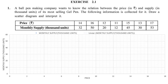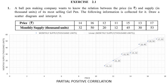Plotting the points: price 14 with supply 32, price 16 with supply 50, price 12 with supply 20, price 11 with supply 12, price 15 with supply 45, price 13 with supply 30, and price 17 with supply 53. All points are plotted on the graph. Drawing an imaginary line, the points are not exactly on a straight line but the line trends positively — so this is a partial positive correlation.